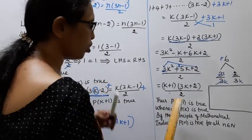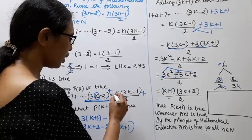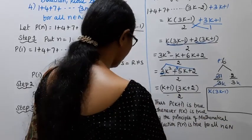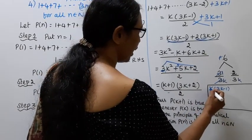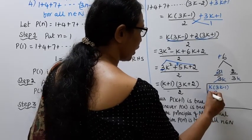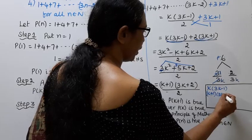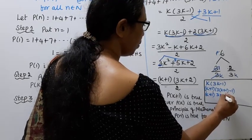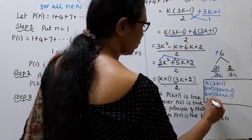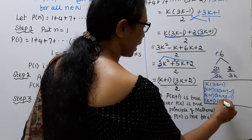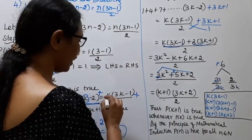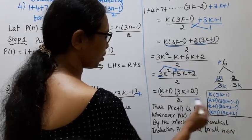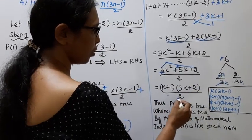K plus 1 times 3K plus 2 divided by 2. This is K plus 1 into 3 times K plus 1 minus 1 by 2. Thus P of K plus 1 is true.